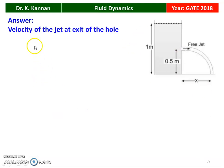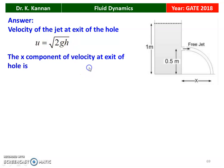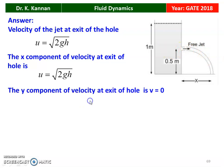This is the arrangement once again. Velocity of the jet at the exit of the hole: u = √(2gh). The x-component of velocity at the exit of the hole is u = √(2gh). The jet is leaving in the x-direction, and the y-component of velocity in the vertical direction is 0, because the jet is moving only in the x-direction.